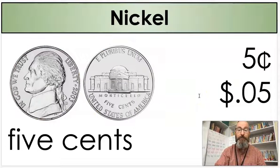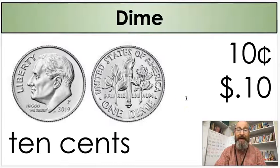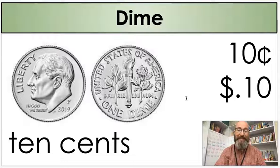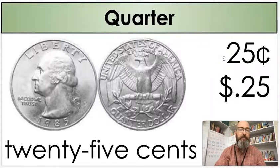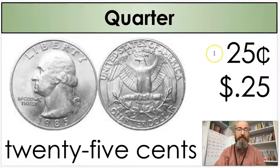Next, we have a nickel. A nickel is worth five cents. We have a dime. A dime is worth ten cents. A quarter is worth twenty-five cents, and we can write it as twenty-five cents.